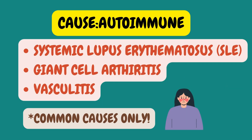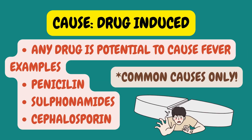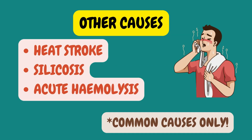Under the autoimmune category, you can remember SLE, vasculitis, and giant cell arteritis. Under drug-induced causes, any drug has the potential to cause fever; some examples include penicillin, sulfonamides, and cephalosporins. Other causes may include heat stroke, acute hemolysis, or silicosis.